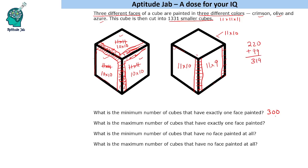So either 300 cubes will have exactly one face painted, or 319 cubes will have exactly one face painted. These are the answers to the first two questions. Now let us solve the other two questions on similar lines.